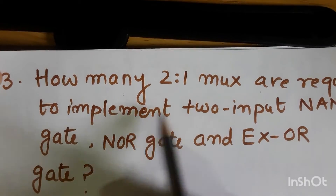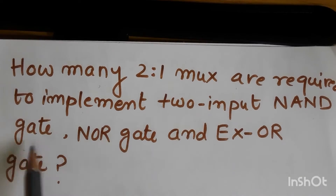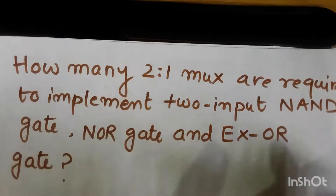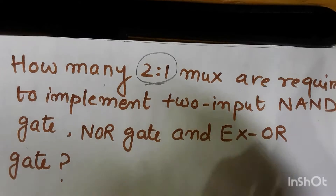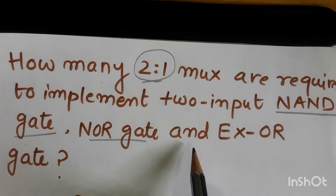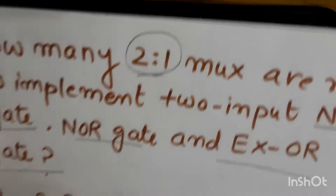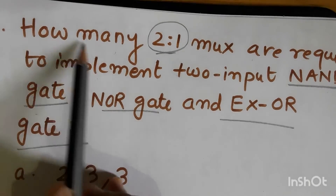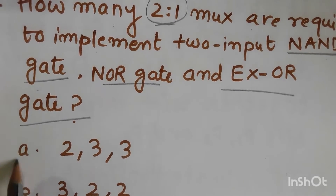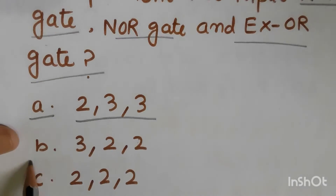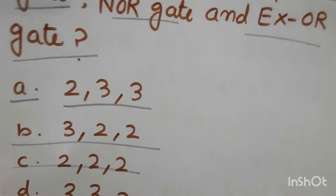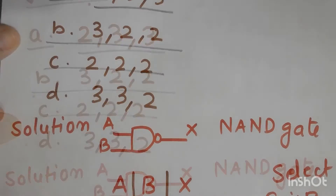Question 3: How many 2-to-1 MUXes are required to implement a 2-input NAND gate, NOR gate, and XOR gate? Options are: A(2,3,3), B(3,2,2), C(2,2,2), D(3,3,2).